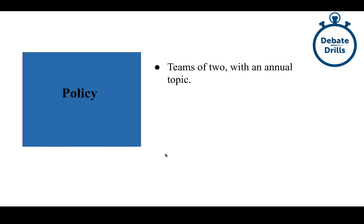So, policy. Teams of two. A topic is given annually — for example, there might be a topic about substantial criminal justice reform covering areas like body cameras and sentencing guidelines. It's very research-focused and very fast. What do I mean by fast? I literally mean the rate at which people speak — people saying more words per minute. This is known as speed reading, spreading, or spreeding: people who are able to read words at a very, very fast pace.